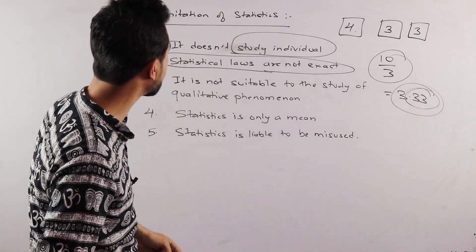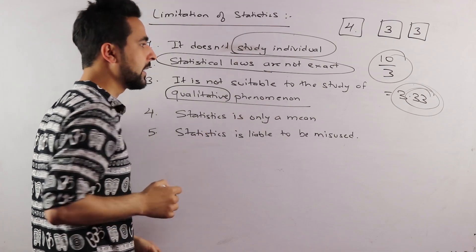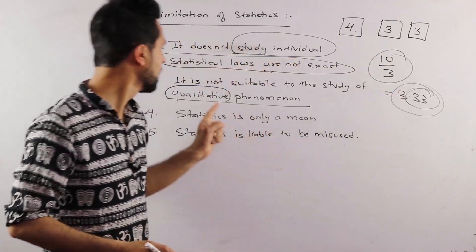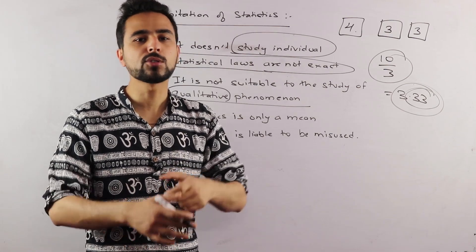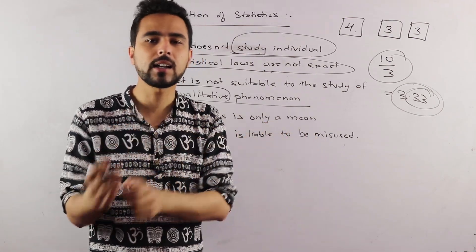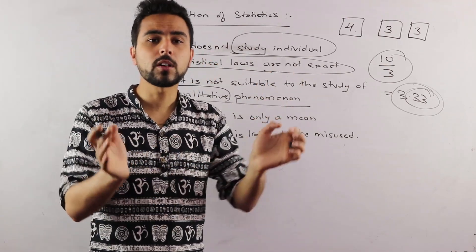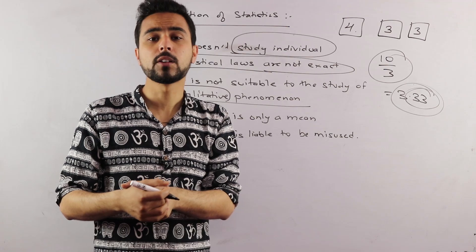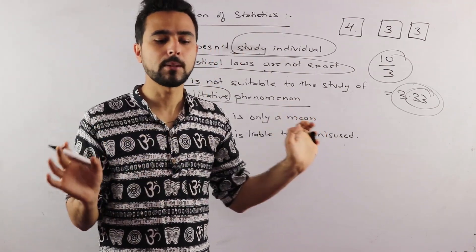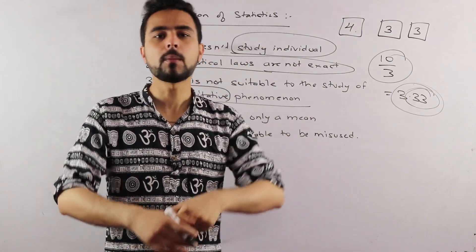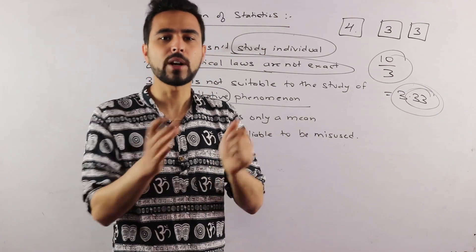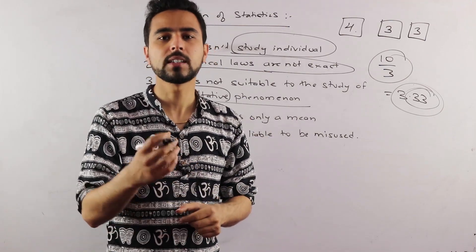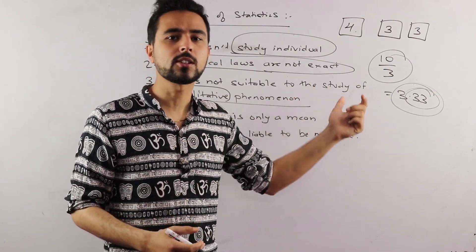Statistics is not suitable for the study of qualitative phenomena. You can study quantitative phenomena — you can express things in numbers. For example, there are many products available; you can count them. But if you have to study quality — like the quality of noodles or a company — you have to express it as a numerical value to study it statistically. If you can express any phenomenon in numerical terms, then you can study it.